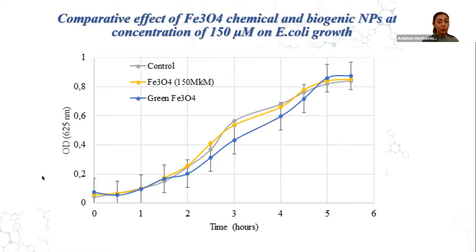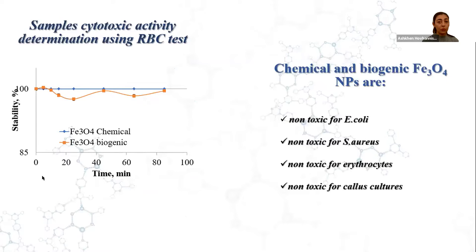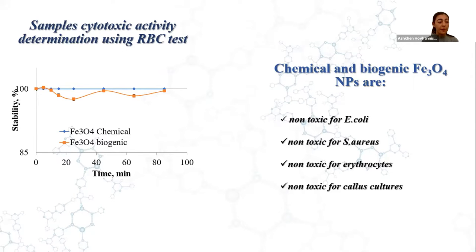Cytotoxicity was also tested against human erythrocytes. Results revealed that nanoparticles preserve erythrocyte resistance by 100% for both chemical and biogenic nanoparticles. These tests were also carried out for cell cultures on the model of Lineum austria, and no pronounced cytotoxic effects were observed. Both chemical and biogenic nanoparticles are non-toxic for gram-positive and gram-negative bacterial strains, for erythrocytes, and for cell cultures. Cytotoxicity properties on different cell cultures are currently being tested.